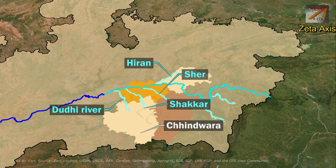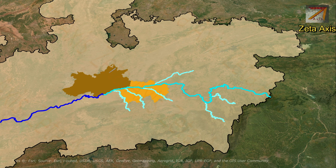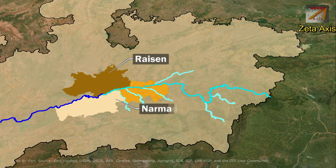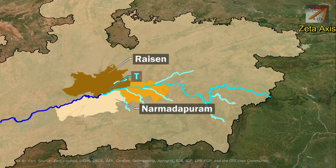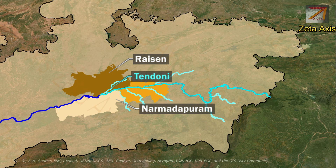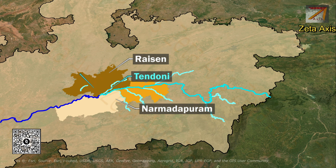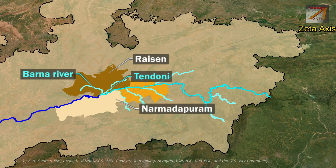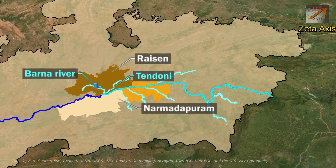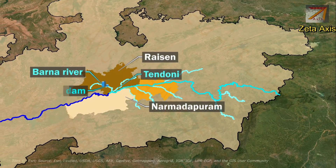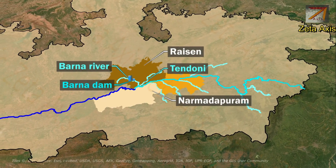From Narsinghpur district, the Narmada flows along the border of Raisen and Narmadapuram districts. In Raisen, the Tendwani river (originating in Raisen district) merges with Narmada. Just after this confluence, the Barna river also joins Narmada. The Barna river originates within Raisen district and Barna Dam is built on it within Raisen district.